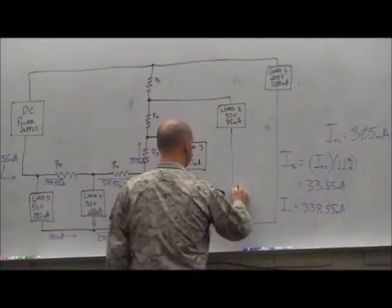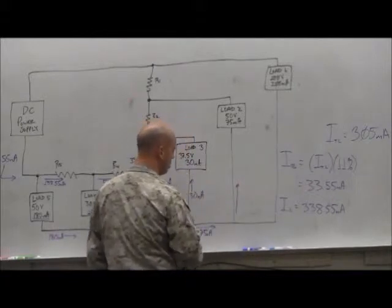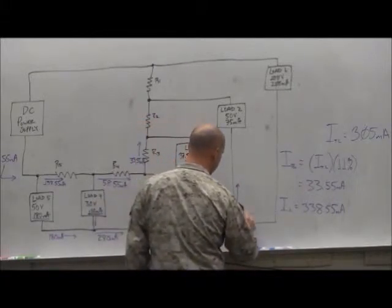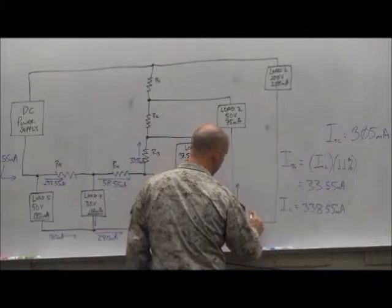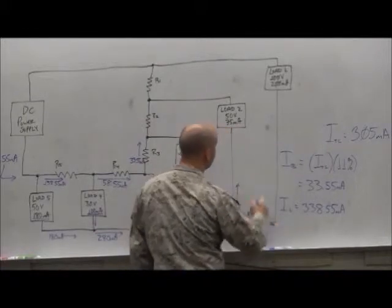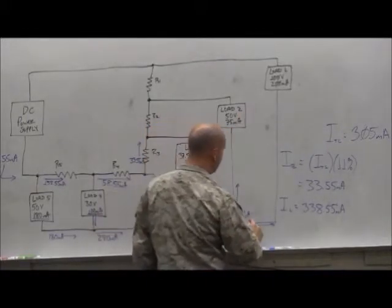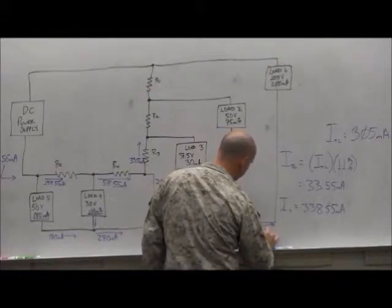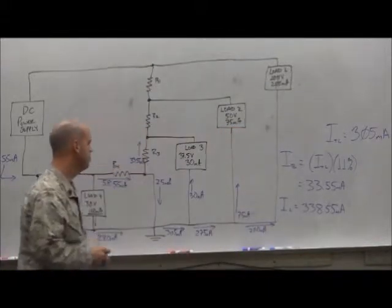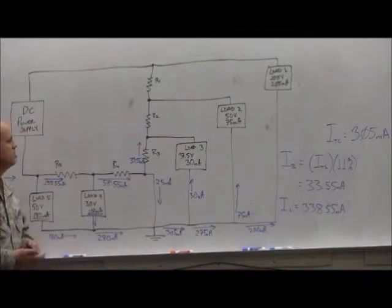Going up into this branch to load two, we took away another 75 milliamps. And that left us with 200 milliamps that we needed for load one. Okay, so far so good.